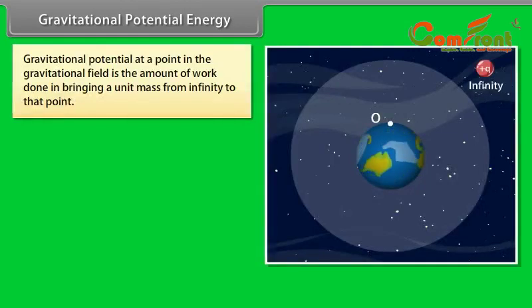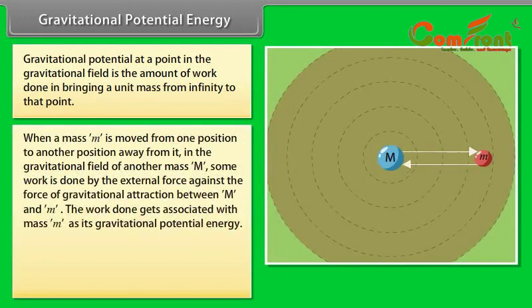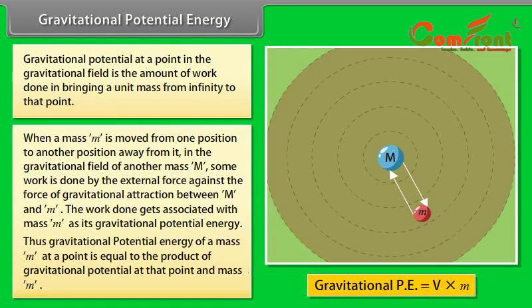Gravitational potential energy. Gravitational potential at a point in the gravitational field is the amount of work done in bringing a unit mass from infinity to that point. When a mass m is moved from one position to another position away from it in the gravitational field of another mass M, some work is done by the external force against the force of gravitational attraction between M and m. The work done gets associated with mass m as its gravitational potential energy. Thus, gravitational potential energy of a mass m at a point is equal to the product of gravitational potential at that point and mass m.